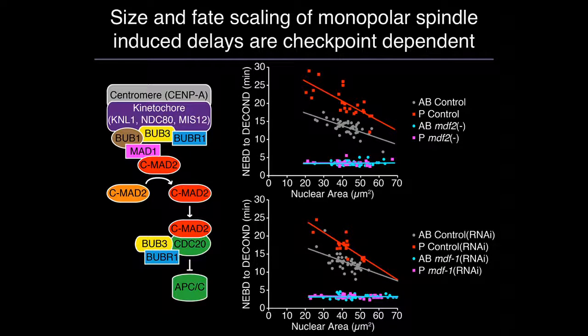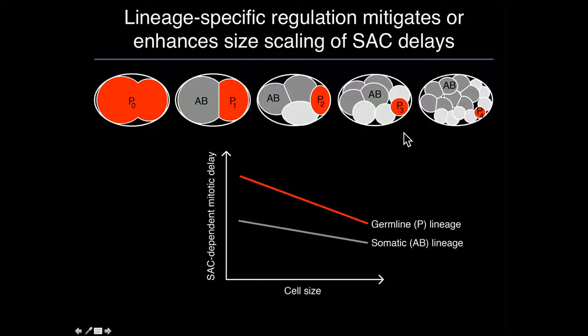We wanted to know whether these delays were, in fact, checkpoint-dependent, or whether we'd see differences in mitotic timing in the absence of checkpoint regulation. Using a null allele of MDF2 — which is MAD2 — and RNAi to MDF1 — which is MAD1 — cells exit mitosis at more or less the same time, irrespective of their size or lineage. So in both germline and somatic AB cells, as cell size decreases the length of mitotic delays increases, but the relationship between cell size and mitotic delay appears to be different between the two lineages. This suggests that in addition to cell size, there are lineage-specific inputs either enhancing checkpoint-dependent delays in the germline or suppressing them in somatic cells.